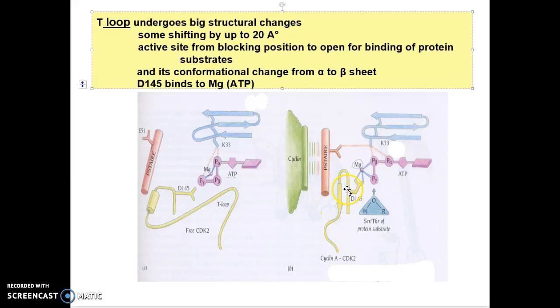In T loop, some residues shift by up to 20 angstroms, which is quite a long distance. The active site in this region opens from a blocking position to the substrate. Here you can see the open position so that the substrate proteins could bind to here for phosphorylation.